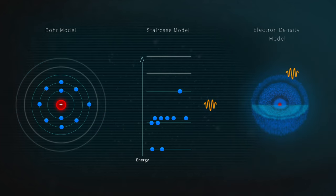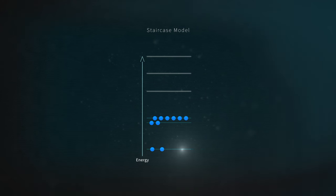The easiest model ignores the atom altogether and just looks at the energy of its electrons. Electrons in an atom can only exist at certain energy levels.